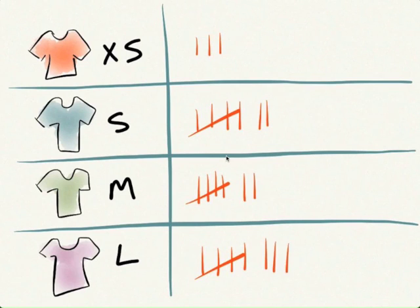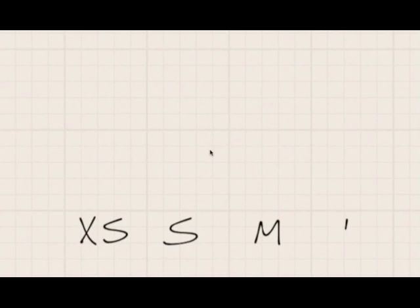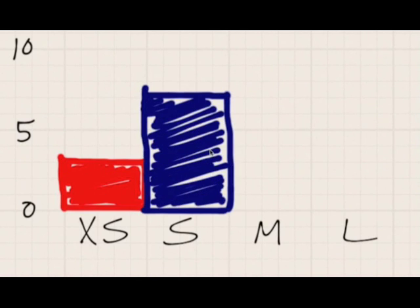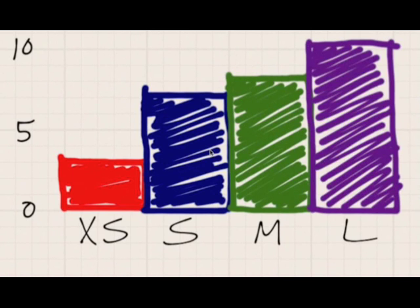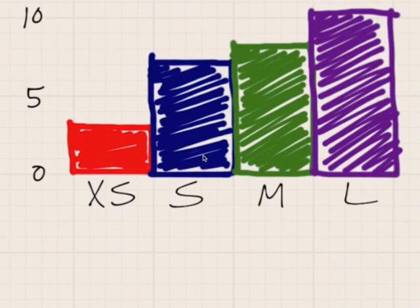We can then convert it over to a histogram, which will give us an easy visual reference to be able to compare the data. You notice as I construct the histogram, there are no spaces in between the bars.